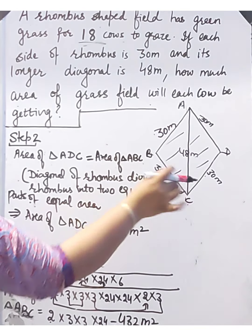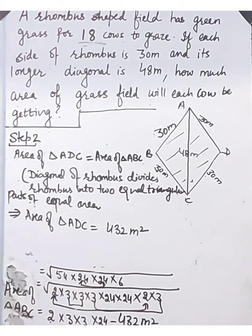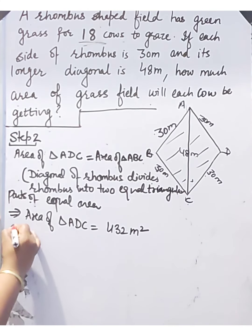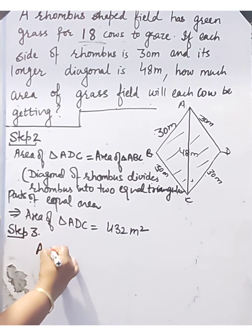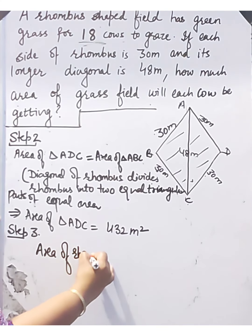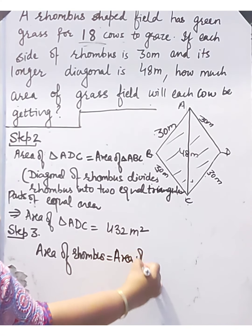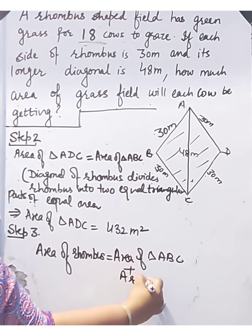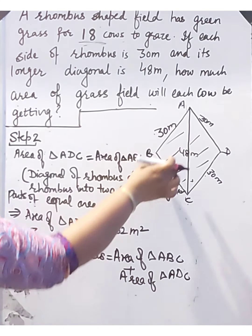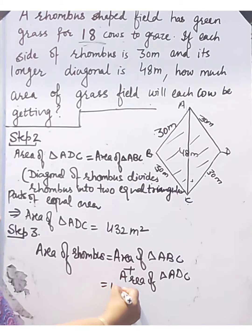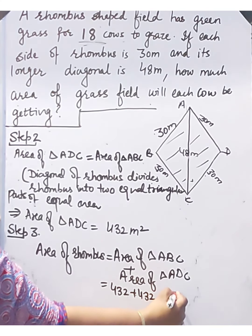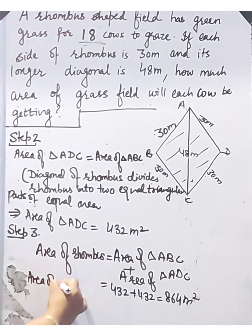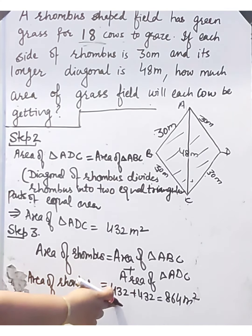In step 3, to find the area of the rhombus, we add the areas of both triangles. Area of rhombus = area of triangle ABC + area of triangle ADC = 432 + 432 = 864 square meters.